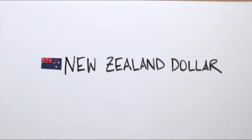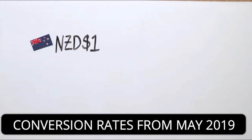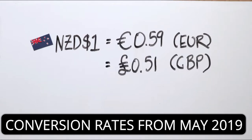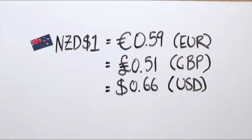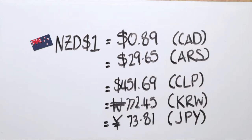For starters, the New Zealand currency is the New Zealand dollar, and as at May 2019, one New Zealand dollar will get you this much in Euro, this much in Great British Pounds, this much in American Dollars, and this much in Australian Dollars. Here are some other currencies to compare.